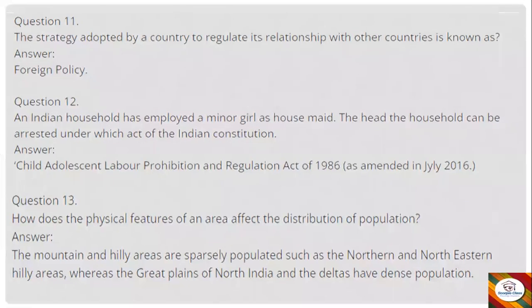Question 11: The strategy adopted by a country to regulate its relationship with other countries is known as — answer: foreign policy. You can write the complete sentence: 'The strategy adopted by a country to regulate its relationship with other countries is known as foreign policy.'